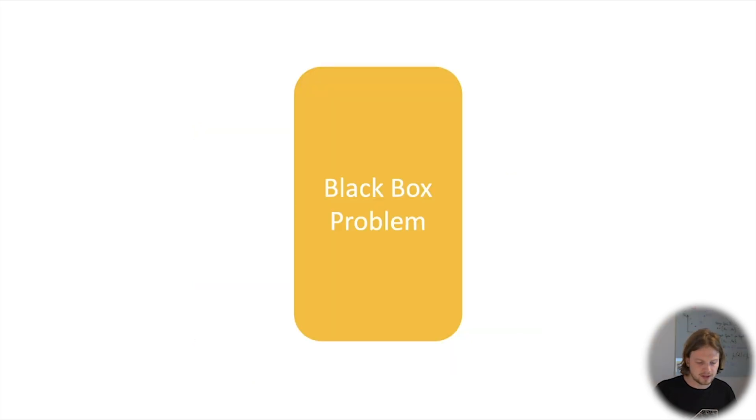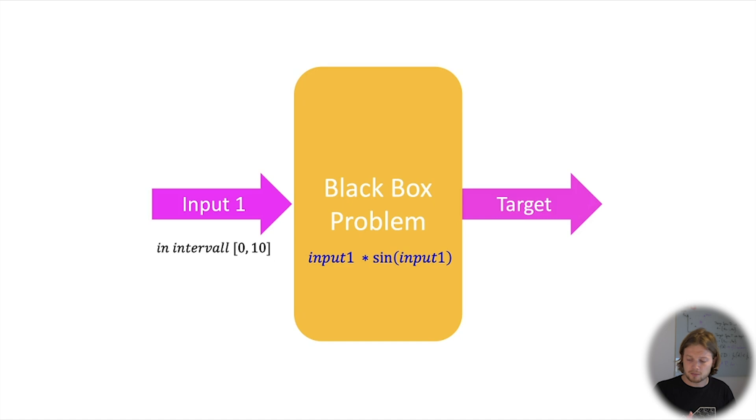Let's start with a simple example where we have a black box problem where we only have one input which is allowed to be in a range between 0 and 10, and we have also one target that we want to optimize. In this case I take a mathematical function just for you to see clearly the conditions between, and that we can later see how good the optimization were. So we take the input and we multiply it with the sine of the input.